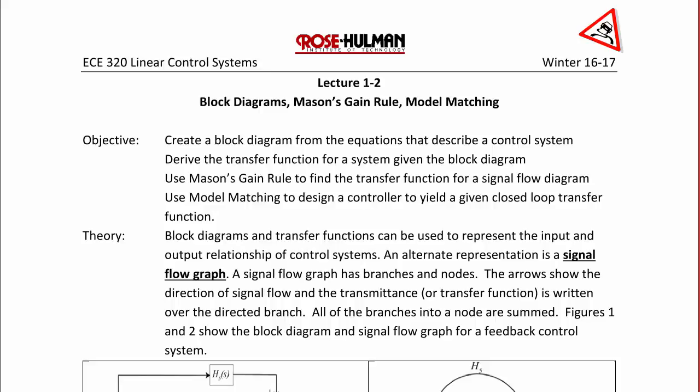An alternative representation is a signal flow graph or signal flow diagram. A signal flow graph has branches and nodes. The arrows show the direction of signal flow, and the transmittance or transfer function is written over the directed branch. All of the branches into a node are summed.